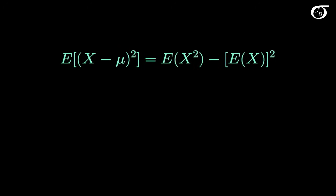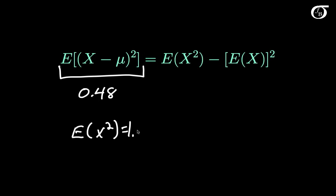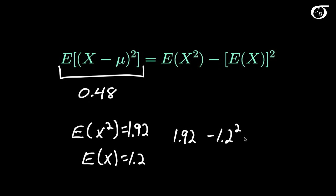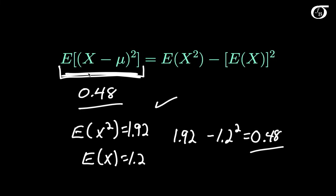Let's go back and verify the shortcut relationship. This relationship holds for any distribution, but let's confirm it works in our case. We just calculated that the variance is equal to 0.48. We also calculated that E[X²] is equal to 1.92 and E[X] is equal to 1.2. If we calculate 1.92 minus 1.2 squared, we see that equals 0.48. So these two quantities are in fact equal. We didn't have to use that relationship here because this quantity was quite easy to calculate, but sometimes this is a very handy relationship.